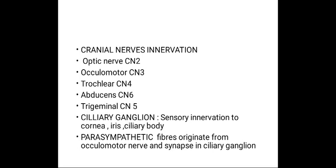Cranial nerves innervate ocular structures. The optic nerve is the second cranial nerve and carries neural signals from the retina. The oculomotor is the third cranial nerve, trochlear the fourth cranial nerve, and abducens controls the extraocular muscles. Touch and pain sensation is carried via the trigeminal nerve, the fifth cranial nerve.